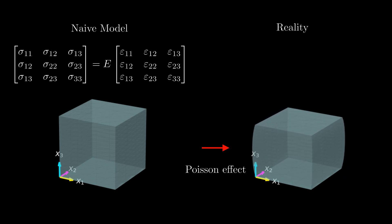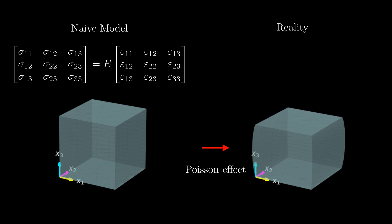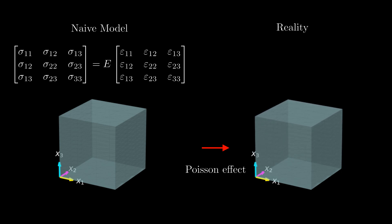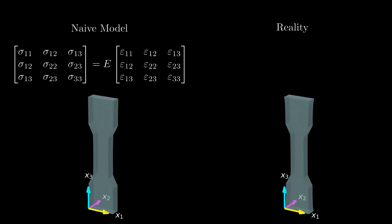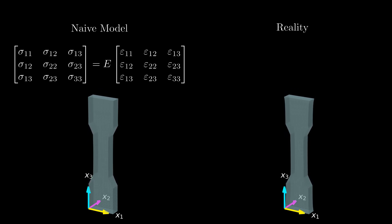The reason behind the Poisson effect is that most materials show a higher resistance to a change in volume than to a change in shape. When we compress the cube, the material resists changing its volume and therefore bulges to the sides. A similar effect is expected under tension — when we pull on an object the material resists changing its volume and should therefore get slimmer. It seems that the naive model fails to describe the Poisson effect.